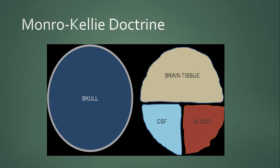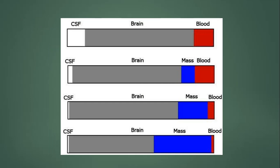As previously discussed, the Monroe-Kelly doctrine states that the skull is a closed, hard cavity constituting three components: brain tissue, CSF, and blood. If a fourth component — a mass — is introduced, it must be accommodated by shifting one of the existing components out of the cavity. First CSF shifts out, then blood, and finally cerebral herniation occurs.